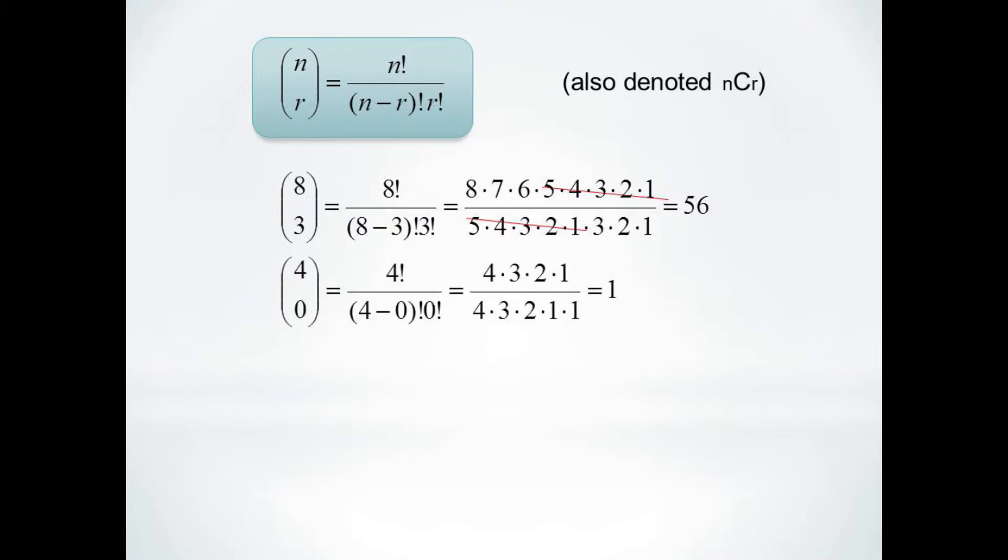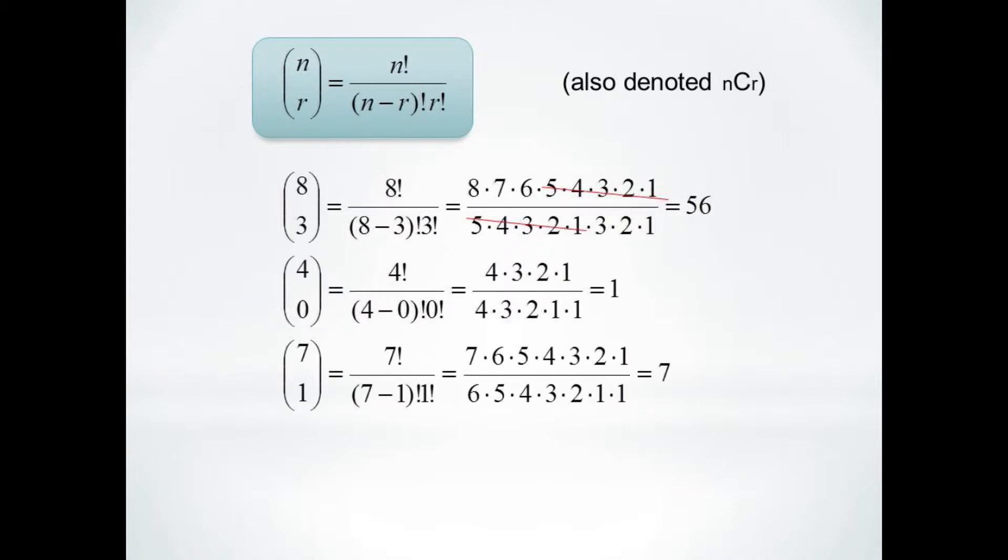4 choose 0 evaluates to 4 factorial over 4 factorial 0 factorial, which is 1. And 7 choose 1 evaluates to 7 factorial over 6 factorial 1 factorial, which just leaves us with 7.